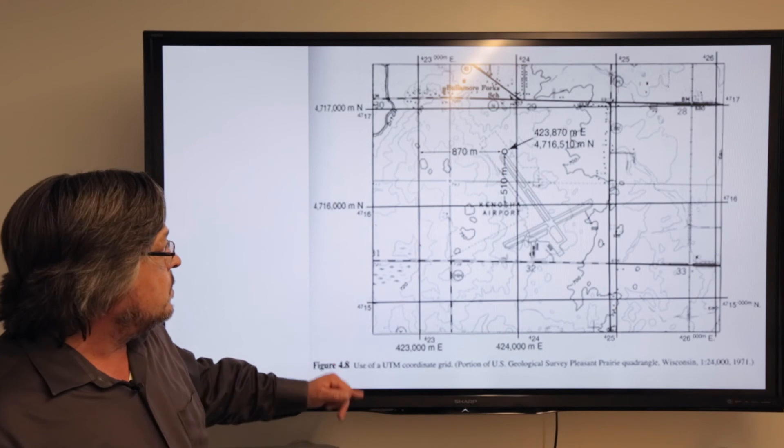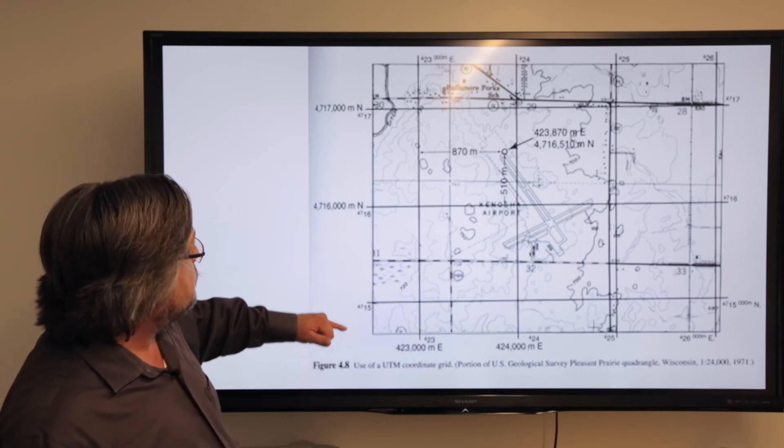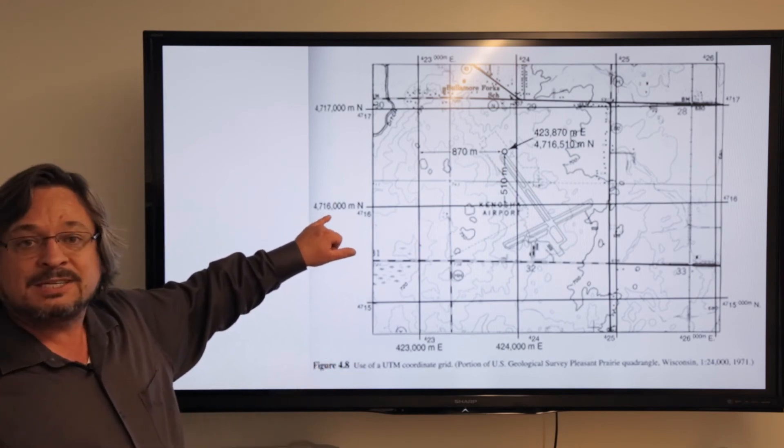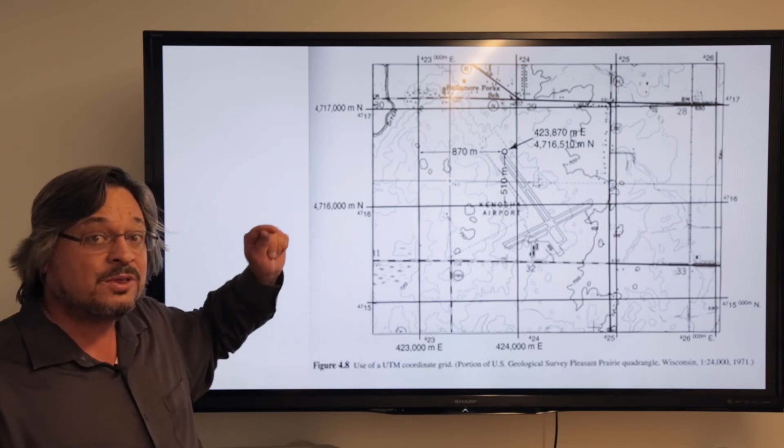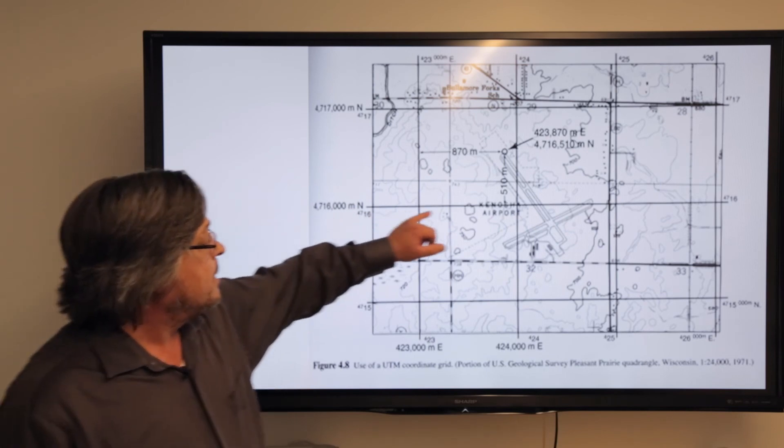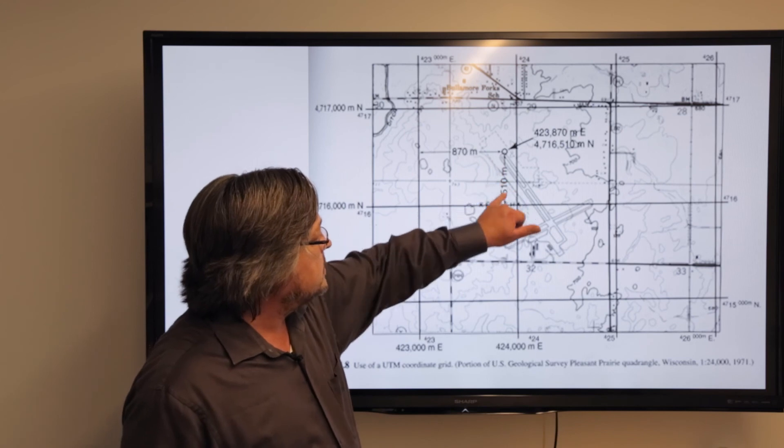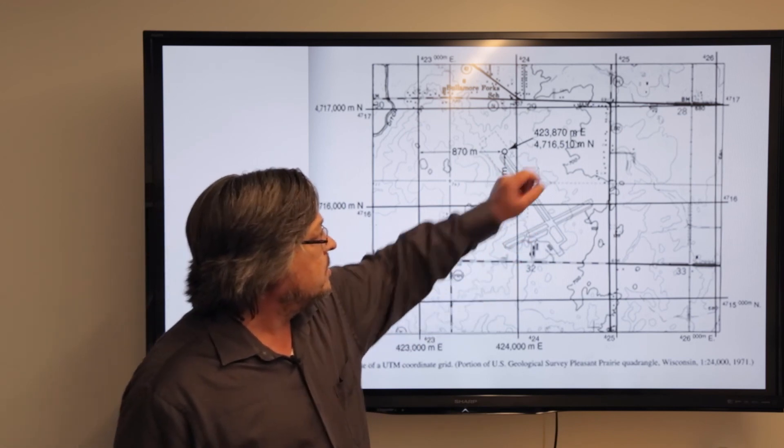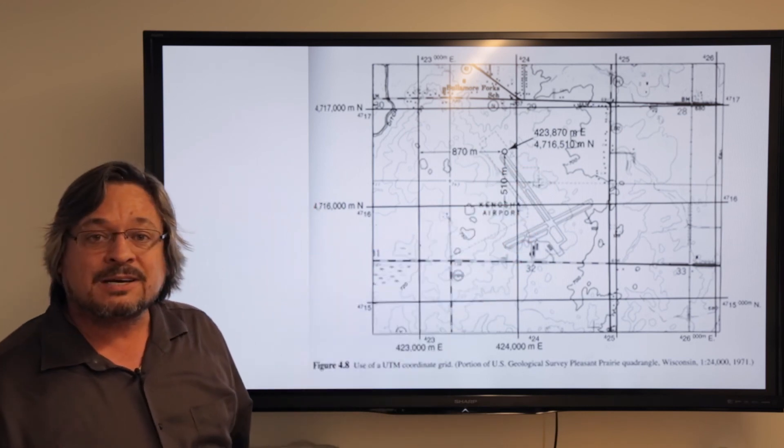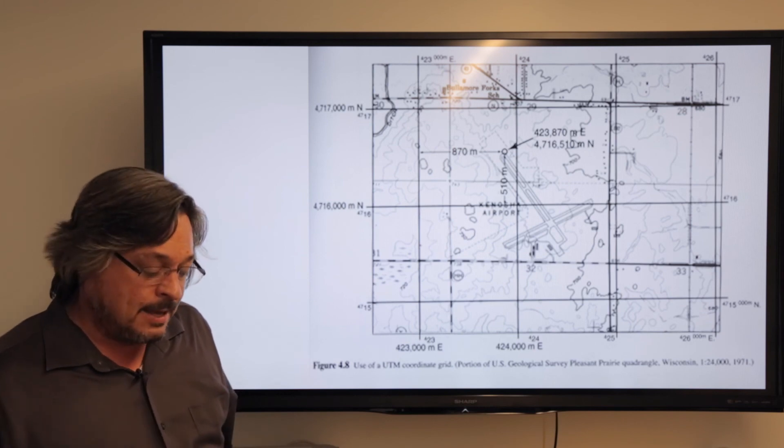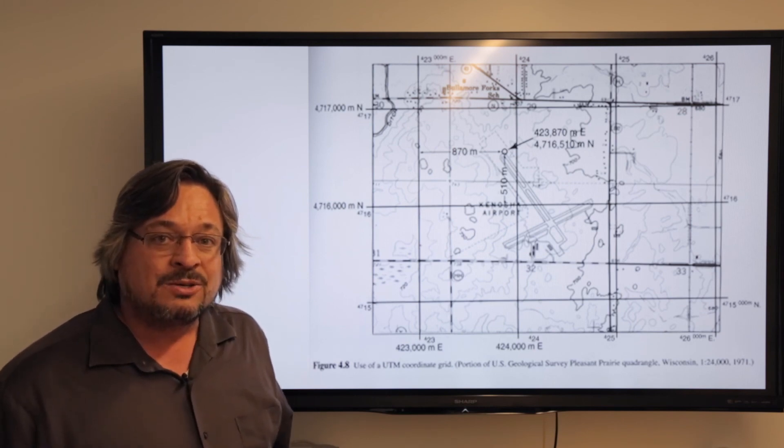For your northings, we read from the bottom up. 4,716,000 meters north of the equator, remember? And then we add a little extra in there to come up with 4,716,510. And that's how you read UTM.